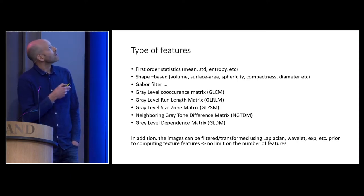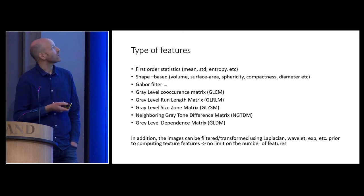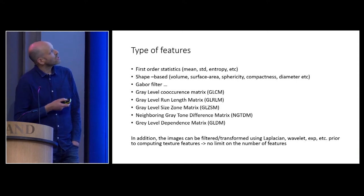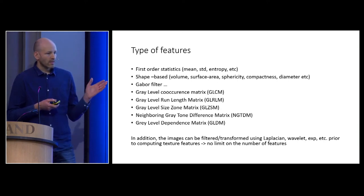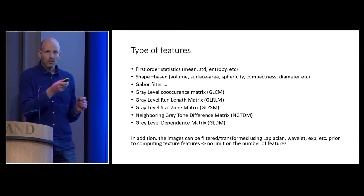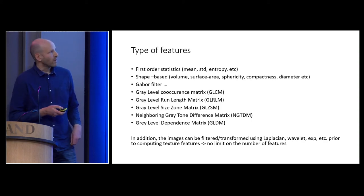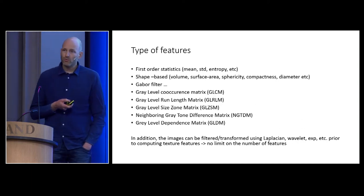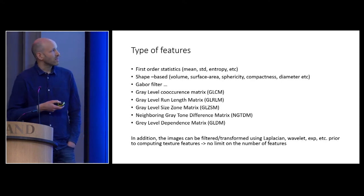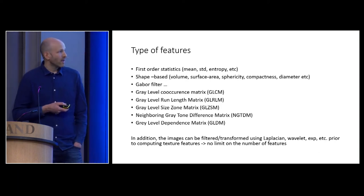Many people use Gabor filters, and there are practically endless numbers of features available. The matrix-based features — GLCM, GLRLM, GLZSM, NGTDM, and GLDM — are also commonly used. They investigate the relation between voxels in space: how neighboring voxels repeat in X, Y, and Z directions. Some people also filter or transform the image using Laplacian or wavelet transforms before applying these methods. The result is that you have practically no limit on the number of features, but more features are not necessarily better.